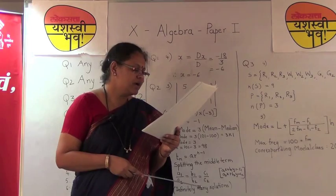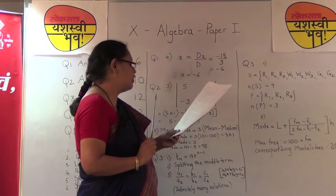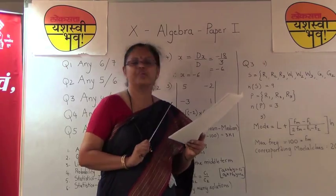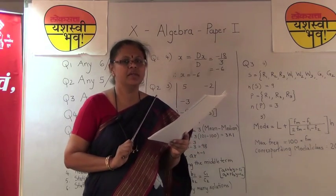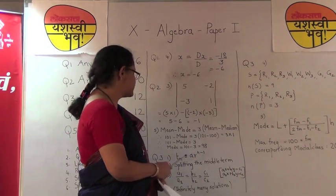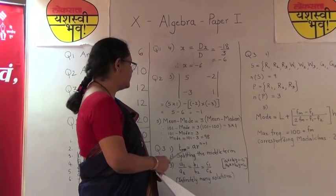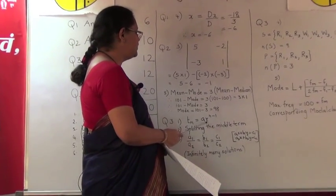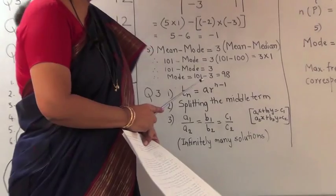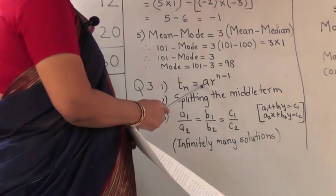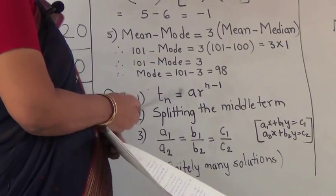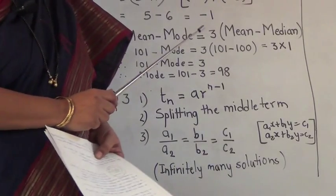Now we come to question number 3, which is solving any 4 out of 5 questions, each carrying 3 marks. The first sum is based on the formula tn = a × r^(n−1), where a is the first term and r is the common ratio. This sum is again related to chapter 1, geometric progression.